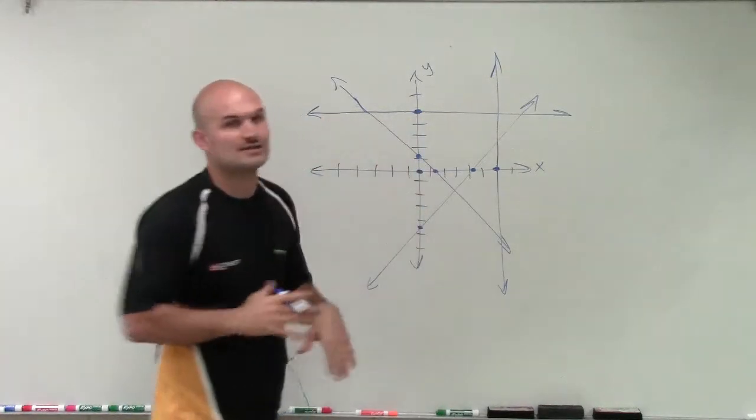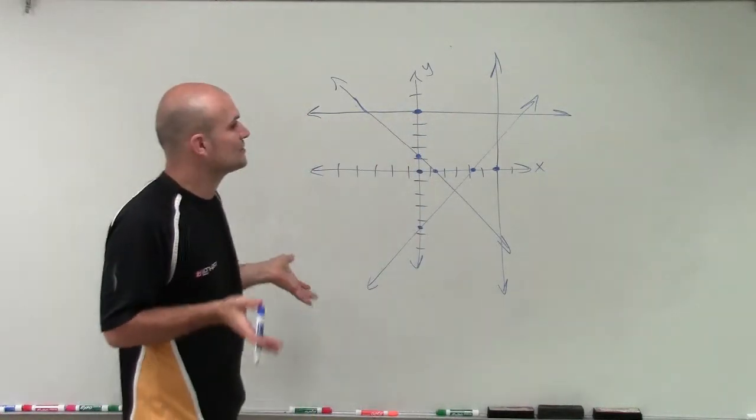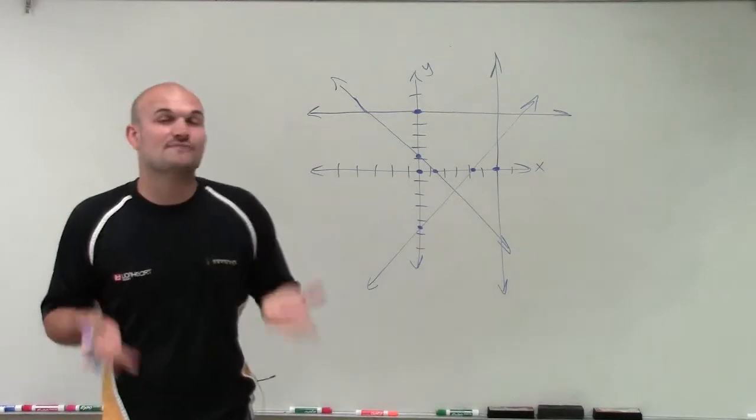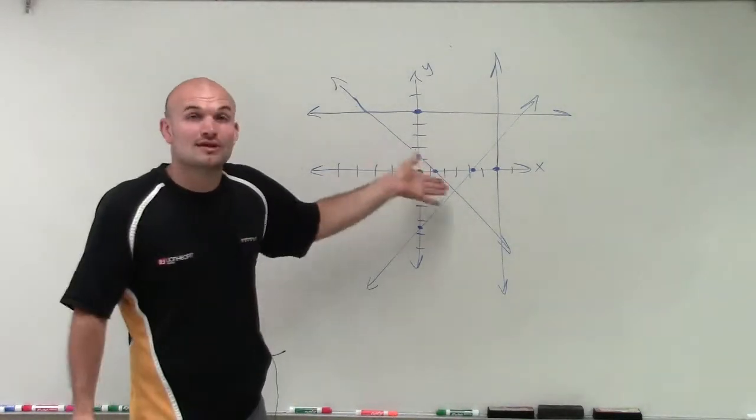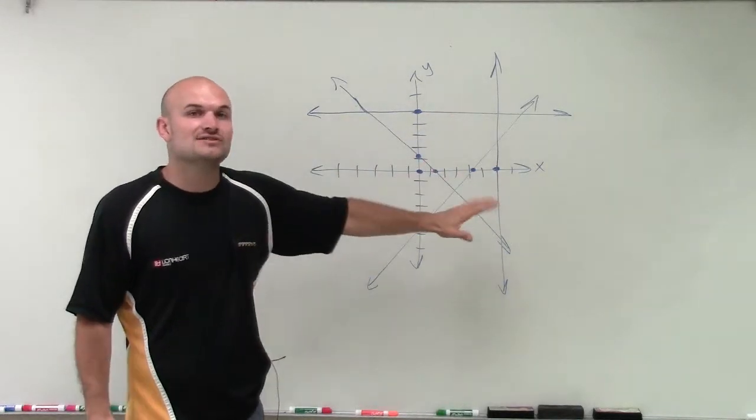So no matter what type of graph you're going to produce, on a linear graph you're always going to have at least an x or a y-intercept, and sometimes, more than likely both. However, it is possible to only have one intercept.